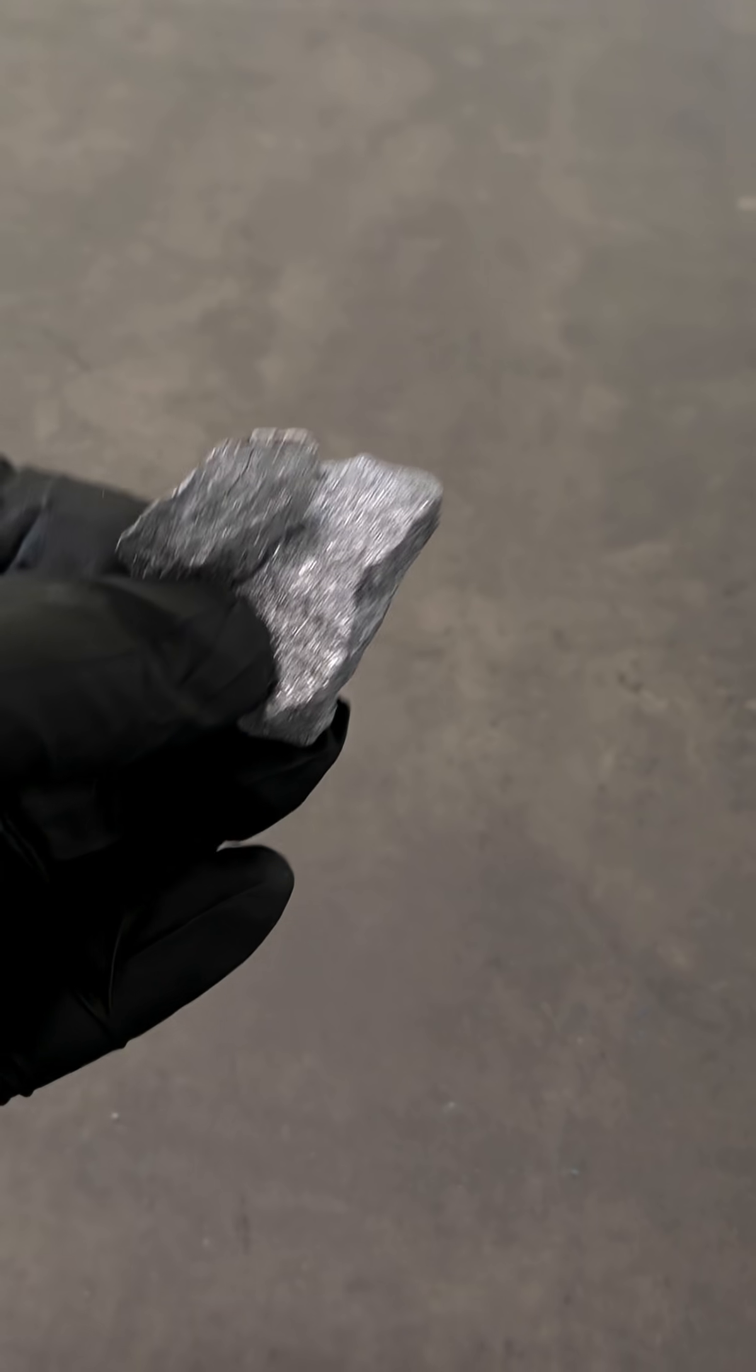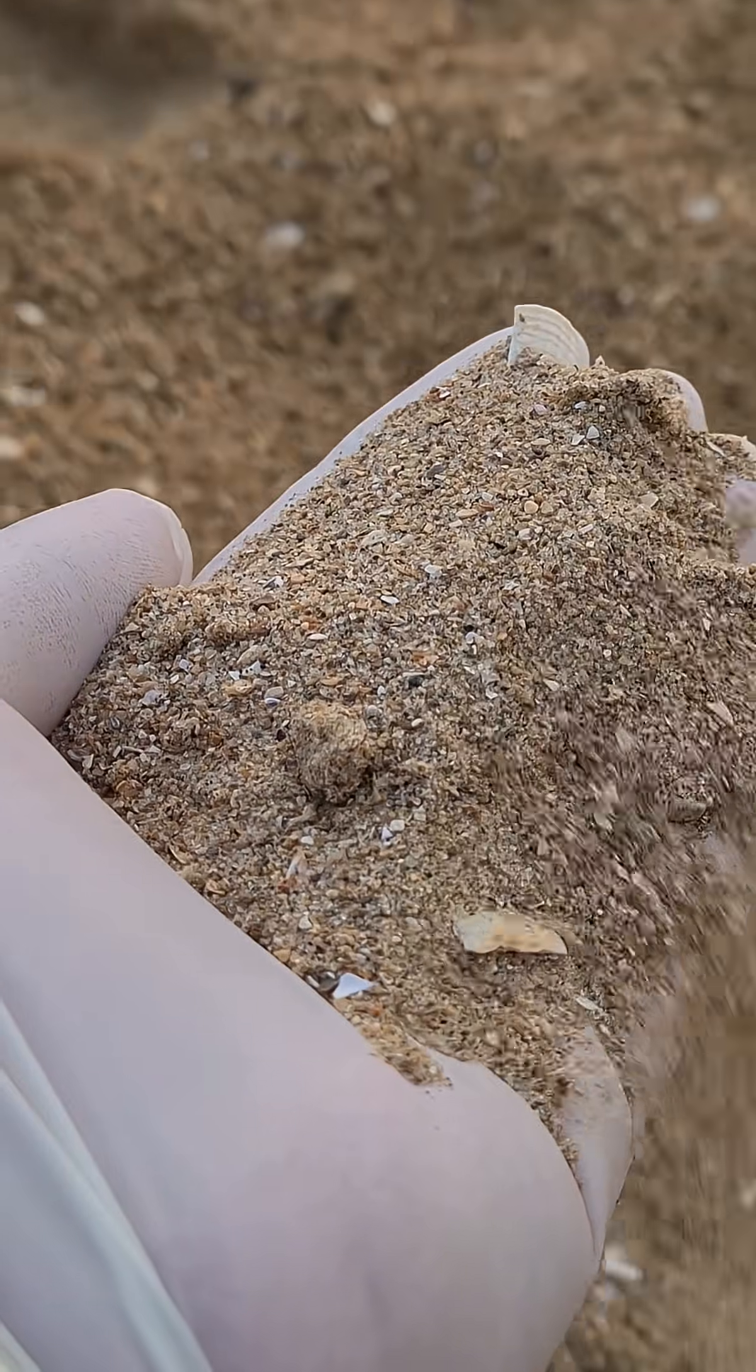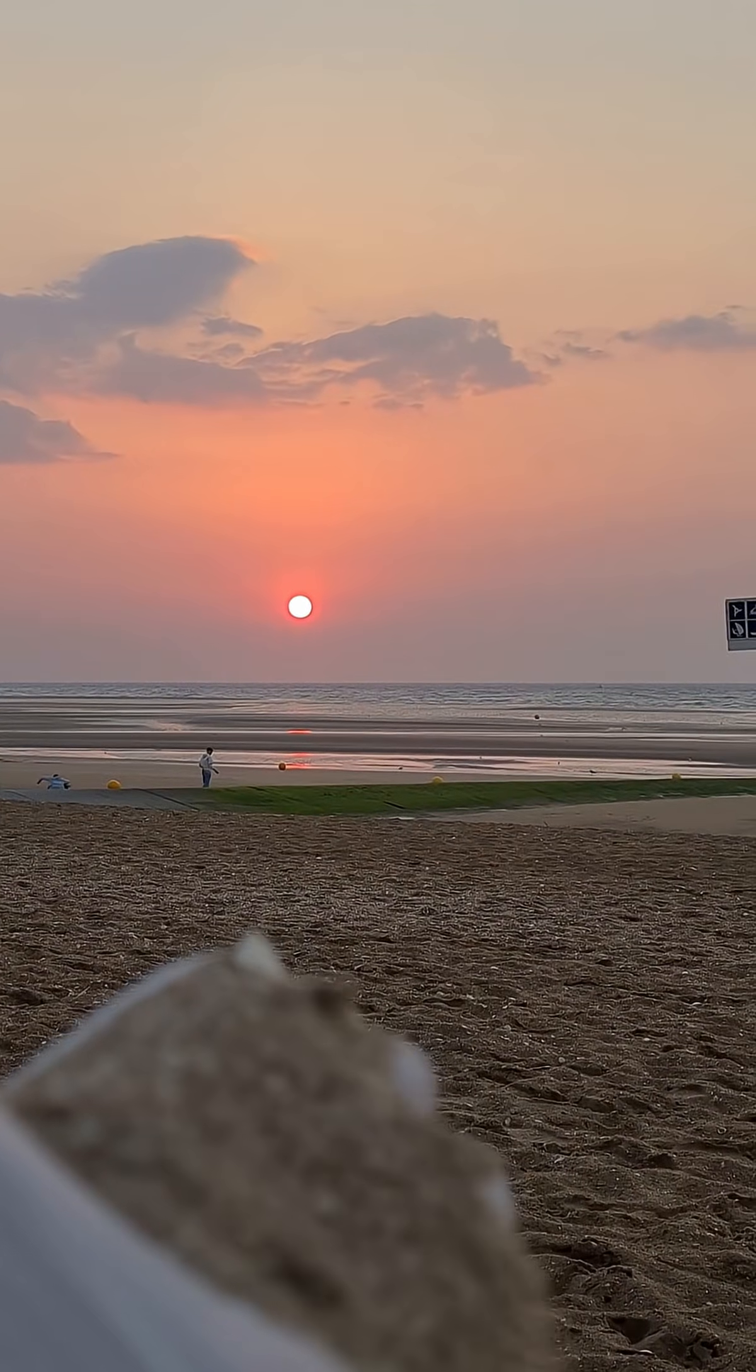It's the second most abundant element after oxygen, silicon's everywhere like sand on the shore. Seriously, because sand is made up of silicon and oxygen, the compound is called silicon dioxide.